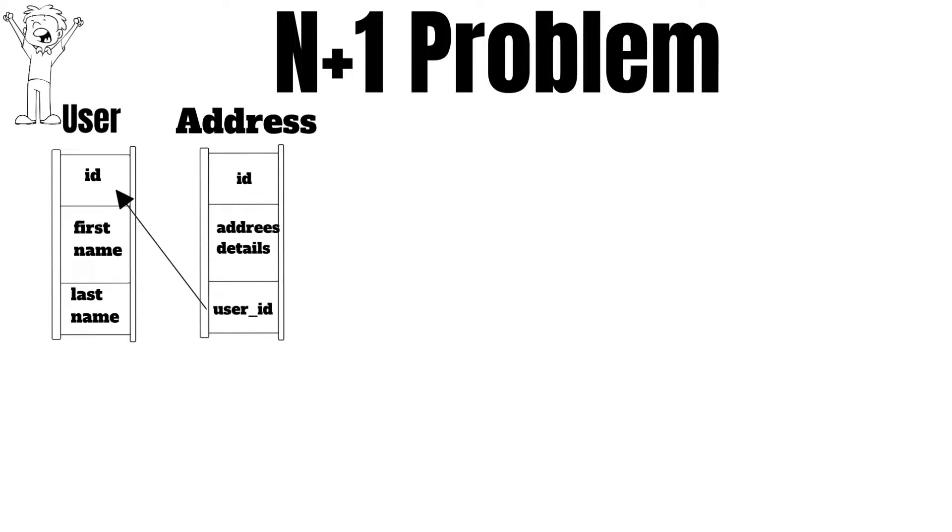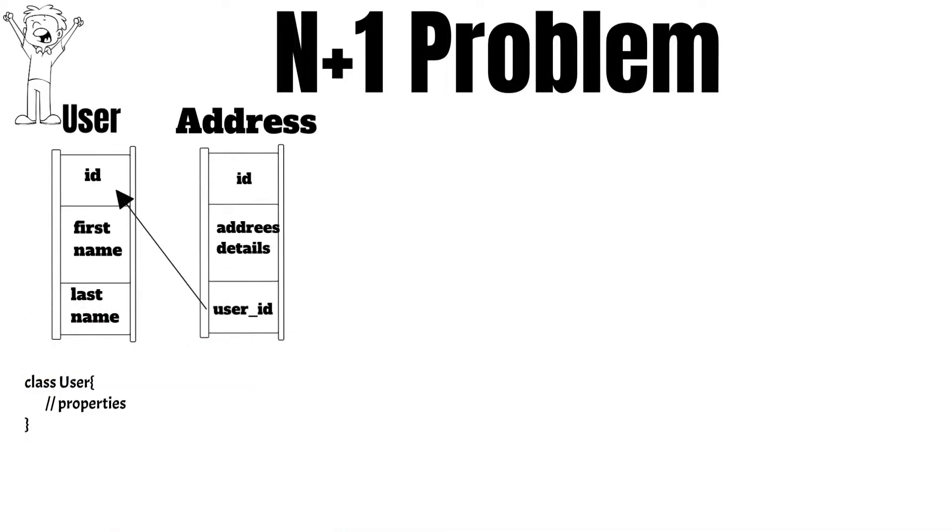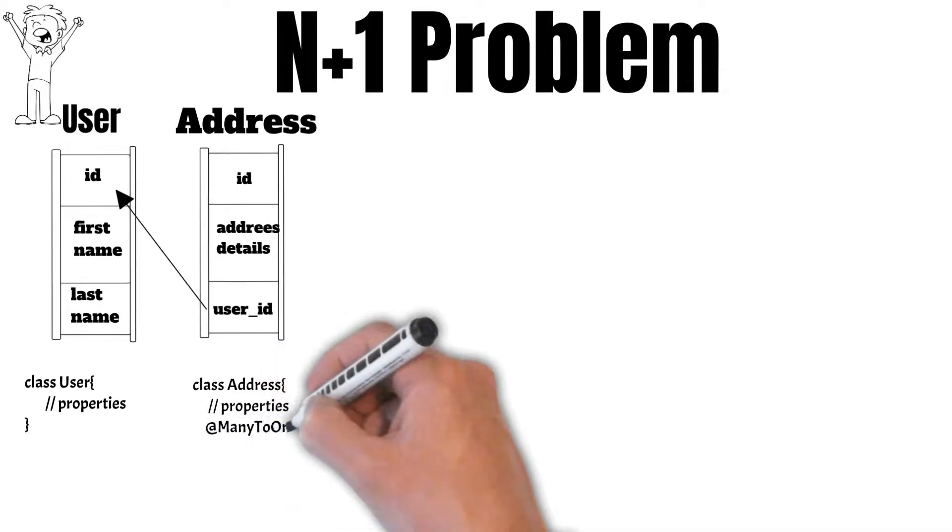So obviously there will be a foreign key from the user id to the id of the user table, and we have created our JPA entities for user and address. So it has all the properties and apart from that it has a many to one relation in the address entity for the user.